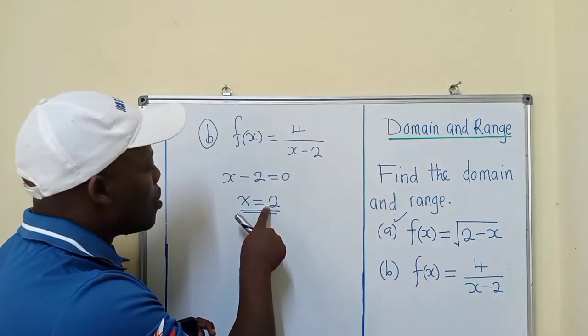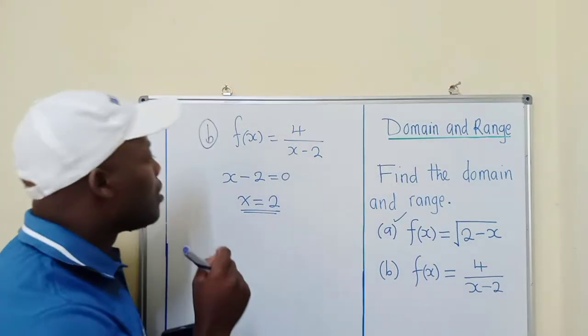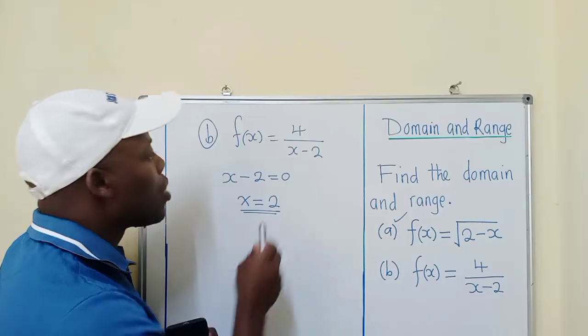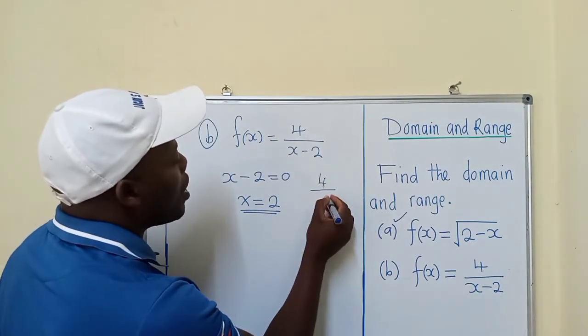This 2, when you put it in the function, will give us a 0 in the denominator, meaning it's undefined. You can't have 0 as your denominator—it would be 4/0, which is wrong.